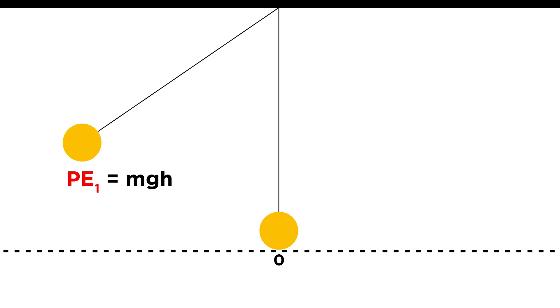This will be equal to mgh, and we can take the bottom of the swing as being zero height. So what is the height at the point of release? To find that, we need to construct a triangle.